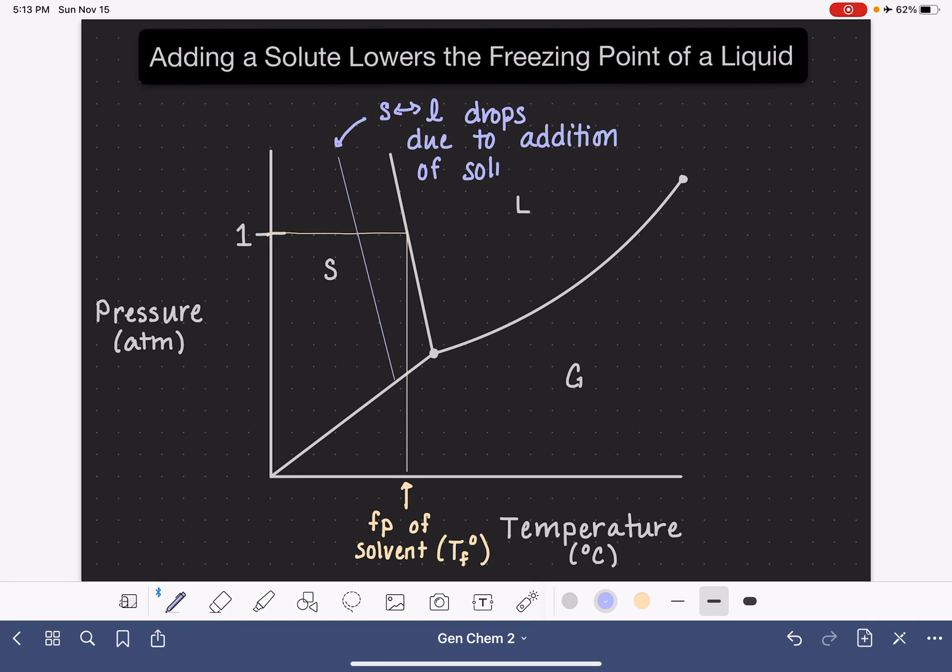So once we've added this solute and that solid-liquid line has shifted, now we can understand how it has affected the freezing point of this particular substance. So we're going to retrace and find the new freezing point. We're going to go back to one atmosphere. We're going to trace along to our new solid-liquid line. And then we're going to go down to the temperature axis to find the corresponding temperature.